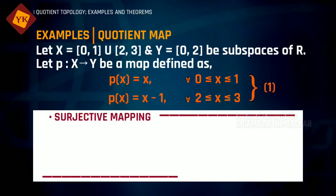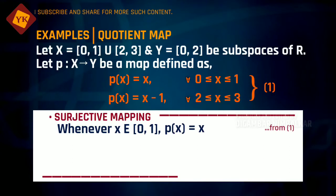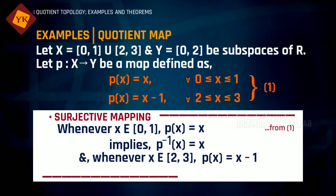Now it is clear that the map is surjective because if we consider element x from [0,1], then p(x) = x. What this means is p inverse of x is x itself whenever x belongs to [0,1]. And we have p(x) = x - 1 whenever x belongs to [2,3].